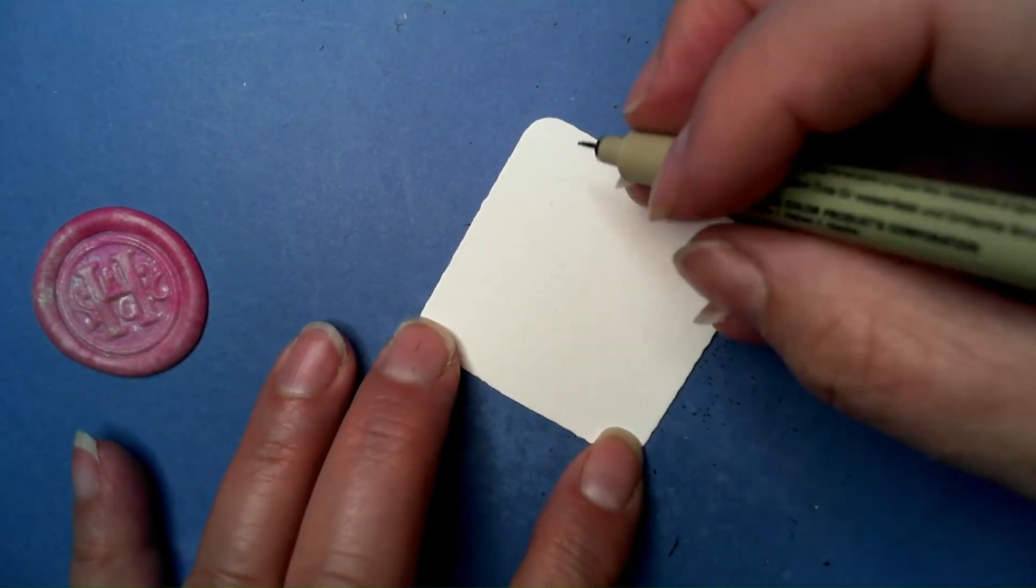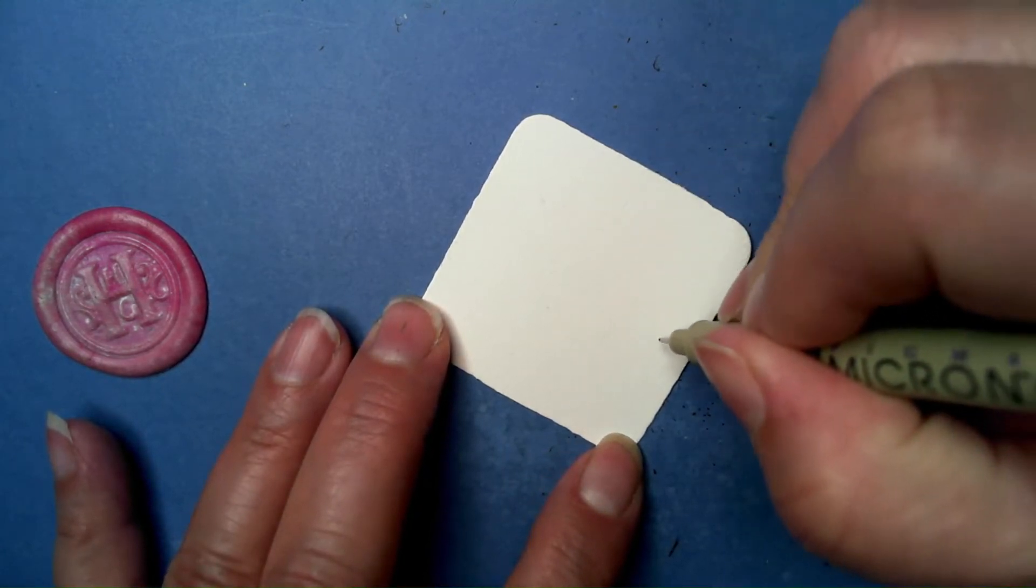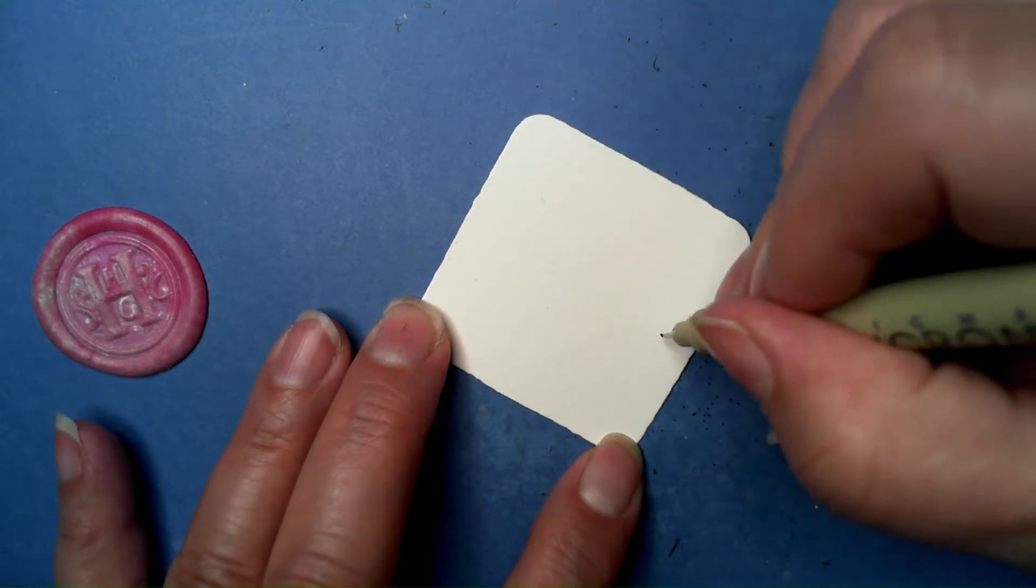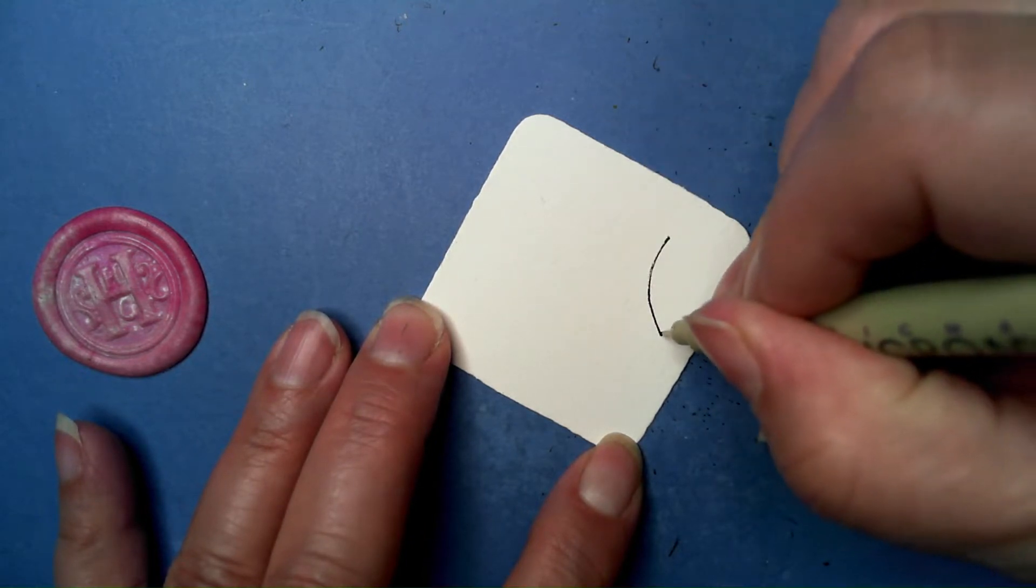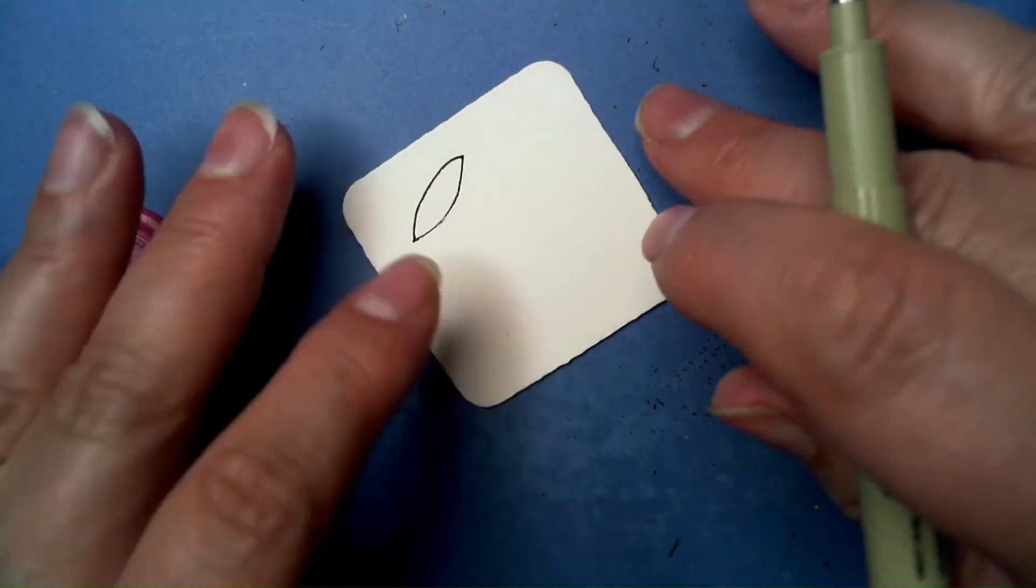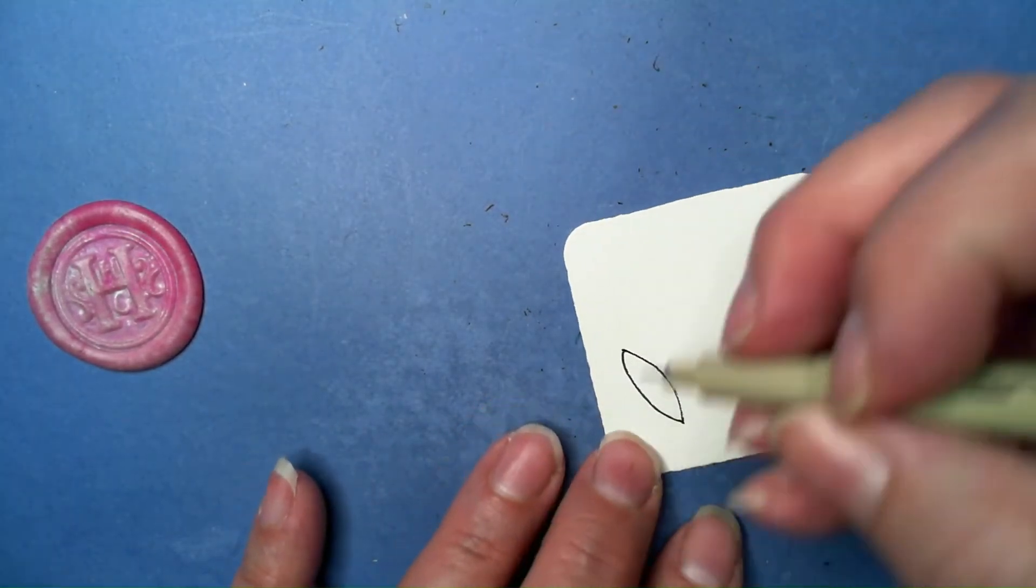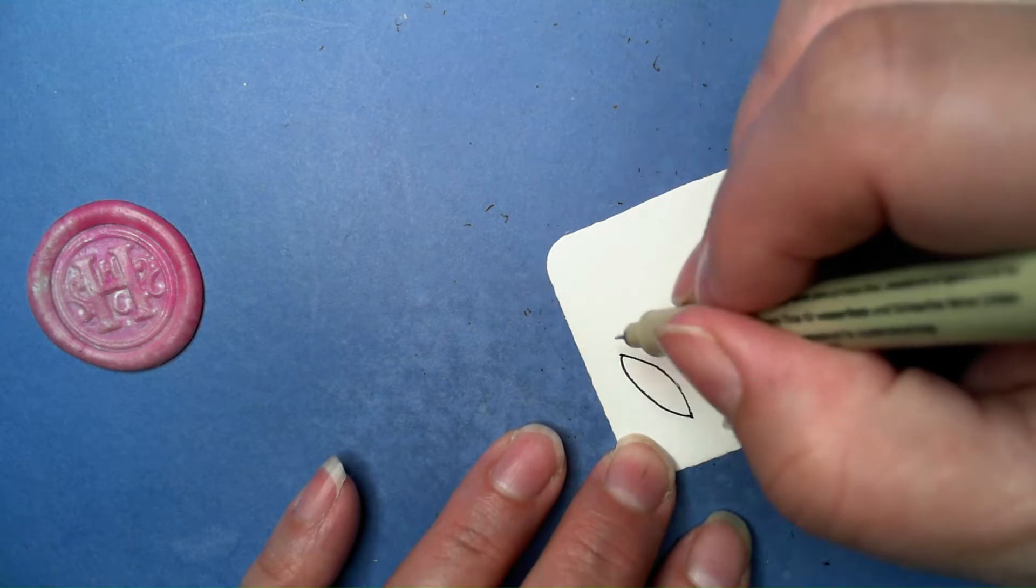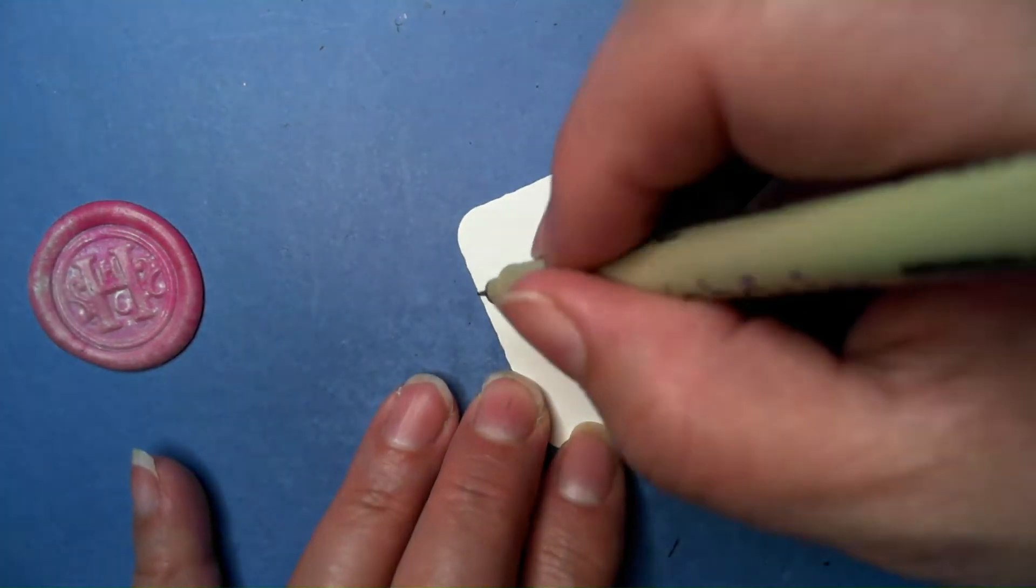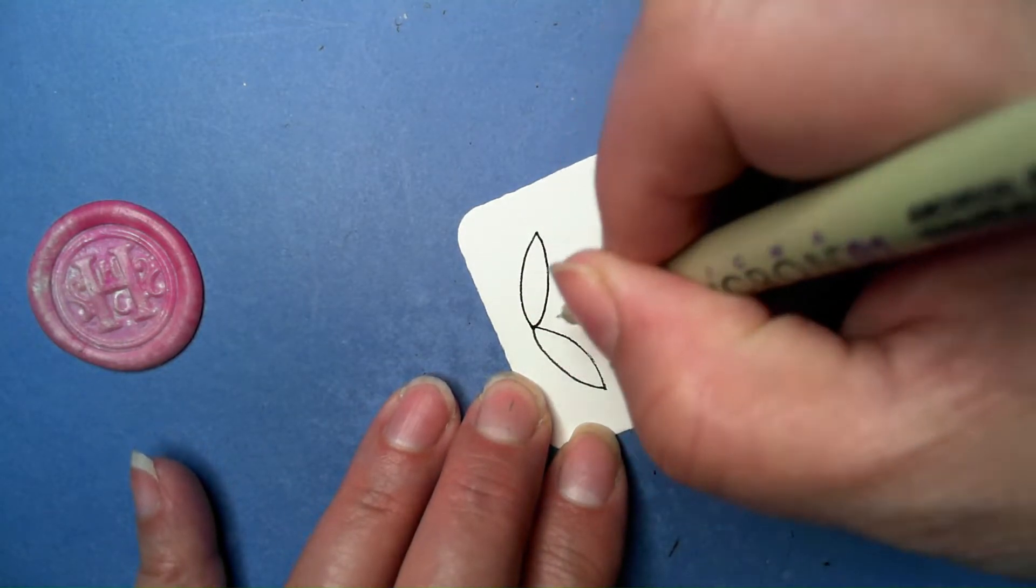We're going to do one large size so we can see how to do it. This starts with two seed shapes coming out of a center. I'm going to turn it so my hand is comfortable. Make sure you do that - that's a Zentangle thing. We want to make sure your hand is comfortable, and there's a consistency with that.